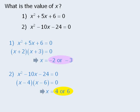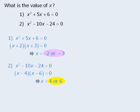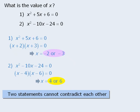Now how can it be true that x equals either negative 2 or negative 3, and x equals either 4 or 6? It cannot be true. So it appears that these two statements contradict each other. But we know that the two statements in a data sufficiency question never contradict each other, so we must have made a mistake somewhere in our calculations.